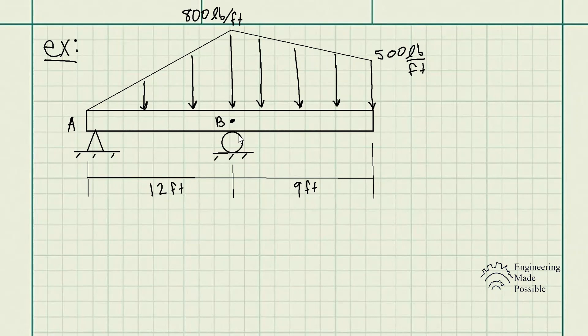The problem statement: replace the distributed loading by an equivalent resultant force and specify its location on the beam measured from point B. We have point A and point B as the respective supports. The dimensions are 12 feet and 9 feet. At the top we have 800 pounds per foot, and at the bottom portion we have 500 pounds per foot distributed along the beam.